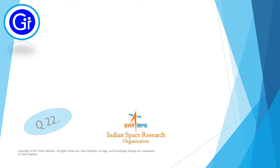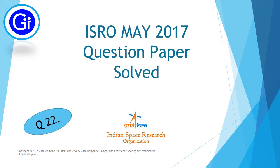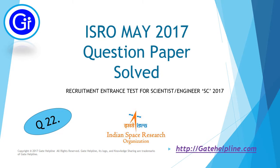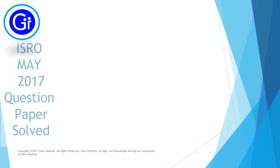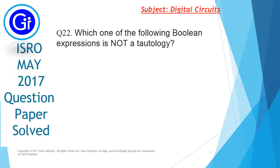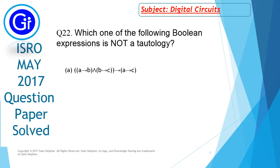Hi friends, now we will see question number 22 from the ISRO May 2017 question paper. Question number 22 is: which one of the following boolean expressions is not a tautology? The options are A, B, C, and D.